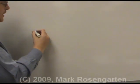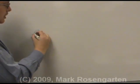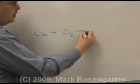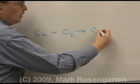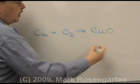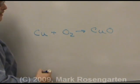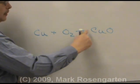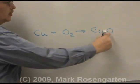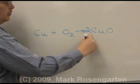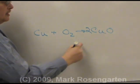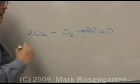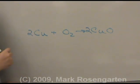For this synthesis reaction, copper reacted with oxygen to form copper 2 oxide. Balancing the equation: one copper, two oxygens on the left — place a two in front to balance the oxygens, then fix the copper count, and now it's balanced.